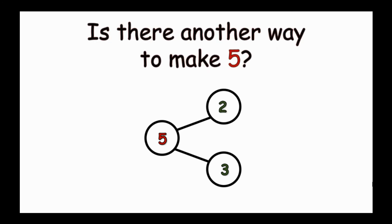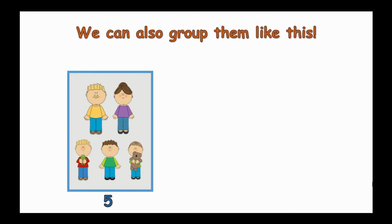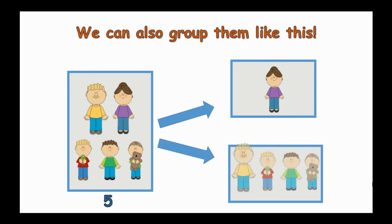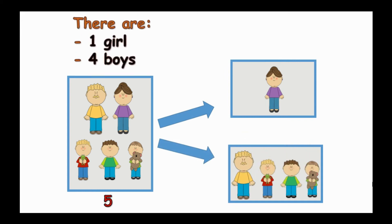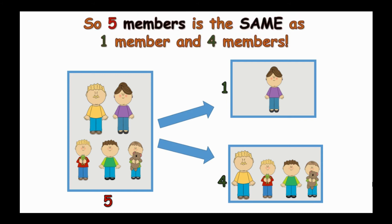Is there another way to make five? Can you think of another way to group the Gruz family? We can also group them like this. There are one girl and four boys. Even though we group them, there are still five members in all. So, five members is the same as one member and four members.